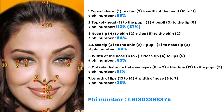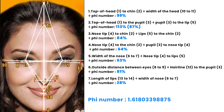The seven ratios are: first, top of the head to chin divided by width of the head. Second, top of the head to the pupils divided by pupils to the lips. Third, nose tip to chin divided by lips to the chin. Fourth, nose tip to chin divided by pupil to the nose tip. Fifth, width of the nose divided by nose tip to the lips. Sixth, outside distance between the eyes divided by hairline to the pupil. Seventh, length of the lips divided by width of the nose. The closer each ratio gets to 1.618, the more ideal it is and the more attractive you would be.